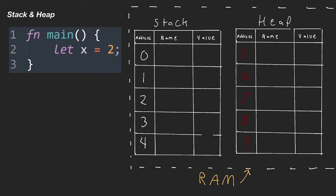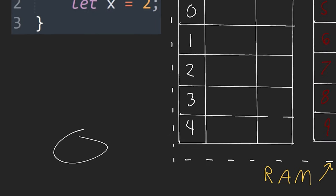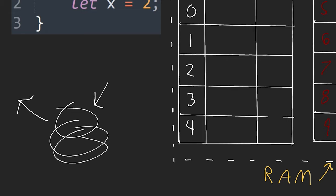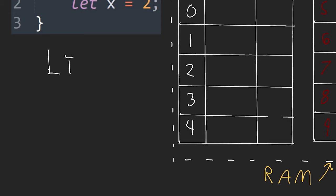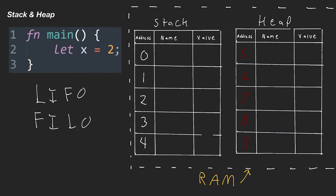In Rust we have two different sections of RAM: the stack and the heap. The stack works similarly to a stack from data structures and algorithms, where the last piece of information in is the first piece of information out. You can think of a stack of plates — the plate put on top most recently will be the first to come off. This is officially called LIFO (last in, first out) or FILO (first in, last out).